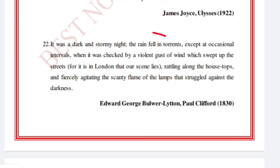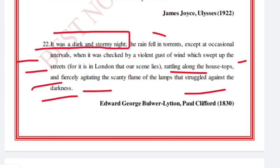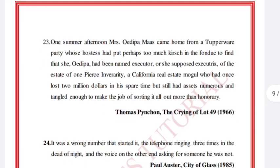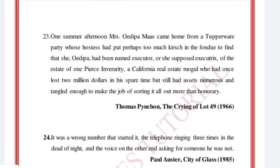'It was a dark and stormy night; the rain fell in torrents, except at occasional intervals, when it was checked by a violent gust of wind which swept up the streets, rattling along the housetops and fiercely agitating the scanty flame of the lamps that struggled against the darkness.' Take the keywords: 'dark and stormy night.' Edward Bulwer-Lytton, Paul Clifford, 1831.